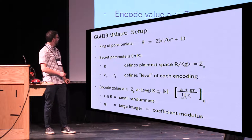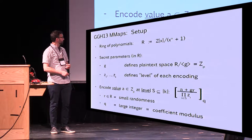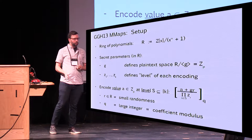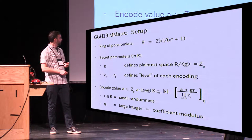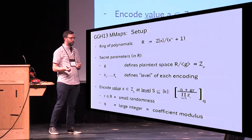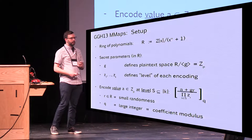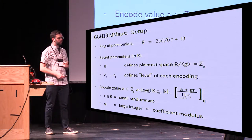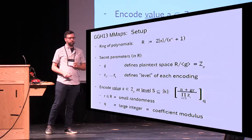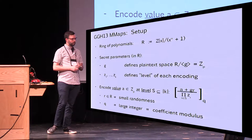To encode a value A at some level S — where levels are a subset of one through K — we put A in the numerator plus a small multiple of G: choose small randomness, multiply it by G, and add A to it. In the denominator, we multiply the Z_i's corresponding to the level. We do all of this mod Q, where Q is some big integer, taking the coefficients mod Q. Without that, this division might not even be well defined in the ring R.